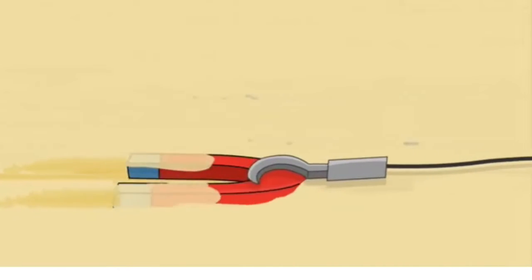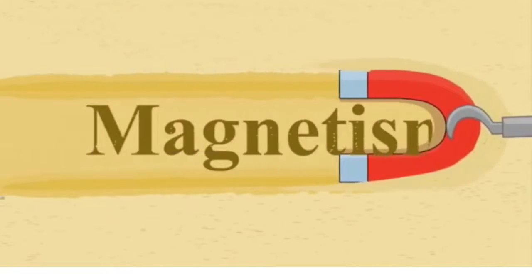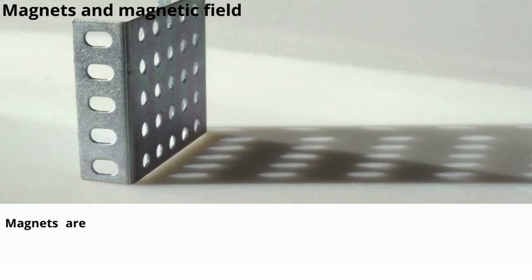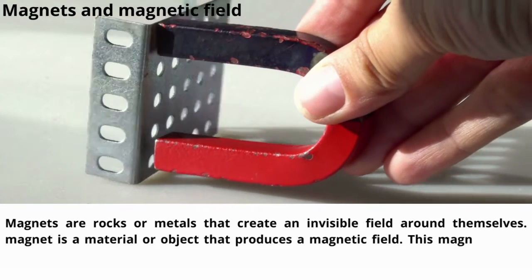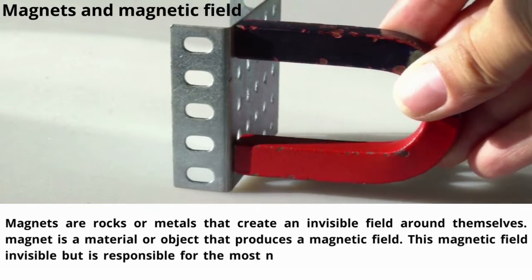Magnets. Magnetism. Let's speak about magnets and magnetic field. Magnets are rocks or metals that create an invisible field around themselves. This field attracts other magnets and certain metals.